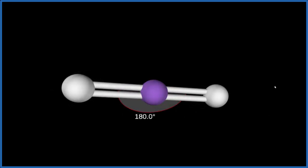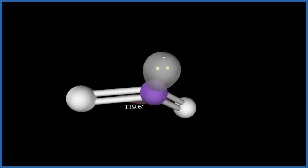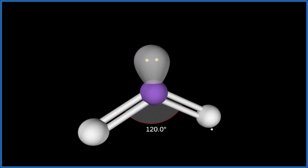But remember we have that extra lone pair there, and we need to put that on. That occupies space. When we do that, we end up with what's called a bent molecular geometry. The bond angle would be about 120 degrees.